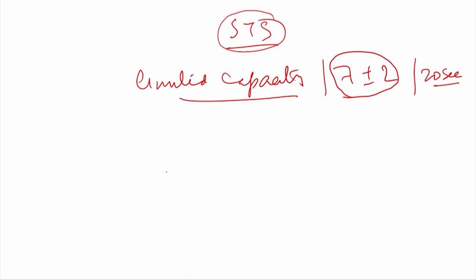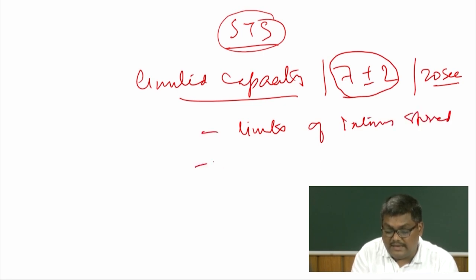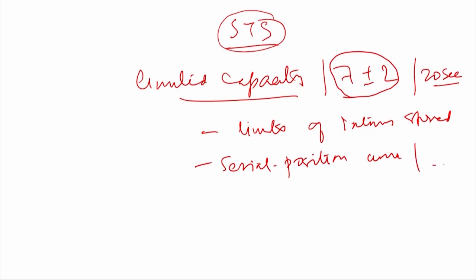The first problem was that this store limits the number of information that can be stored. There were limits on the number of items stored. Also, in a standard serial position curve, people should not be able to retrieve items in the middle of the list. This is what the serial position curve looks like — the recency effect happens here, and the primacy effect happens here.